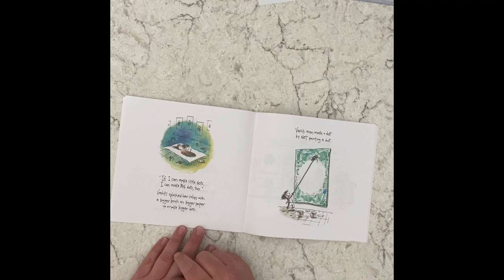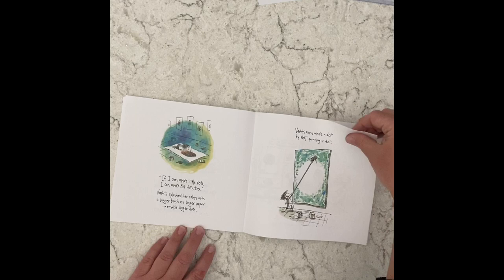If I can make little dots, I can make big dots too. Vashti splashed her colors with a bigger brush on bigger paper to make bigger dots. Vashti even made a dot by not painting a dot. See how she went around? You could also do that in this project.